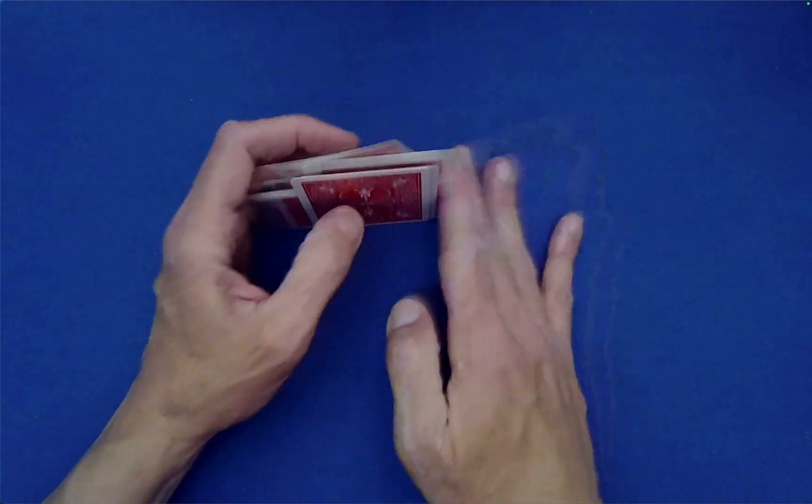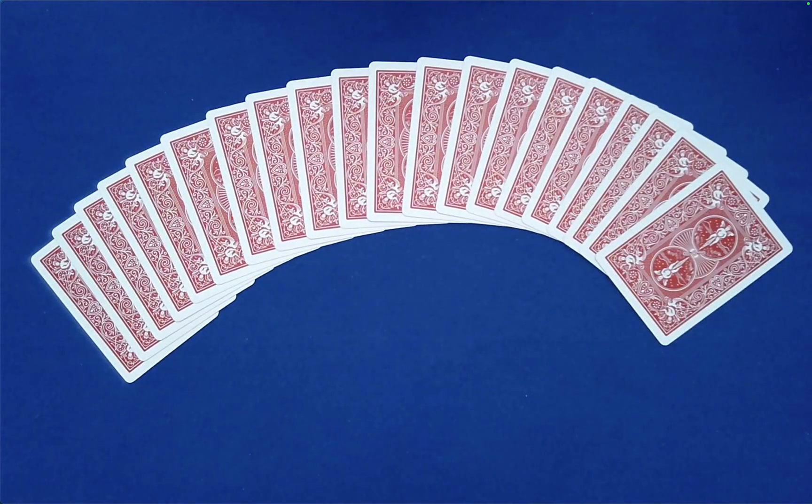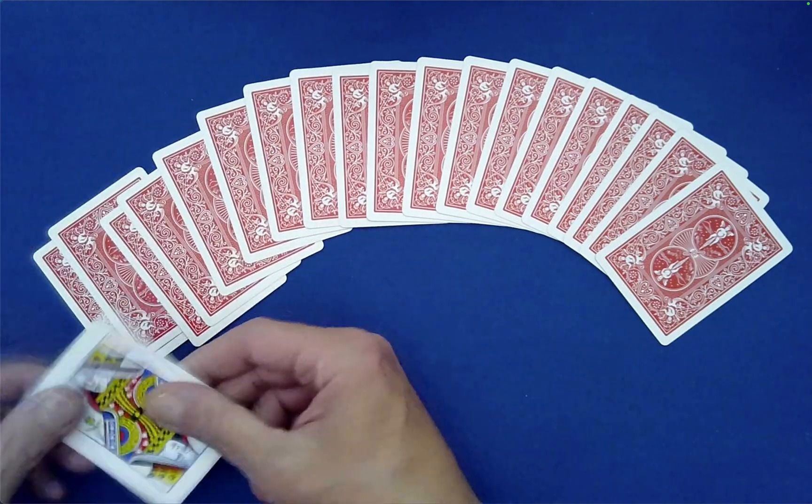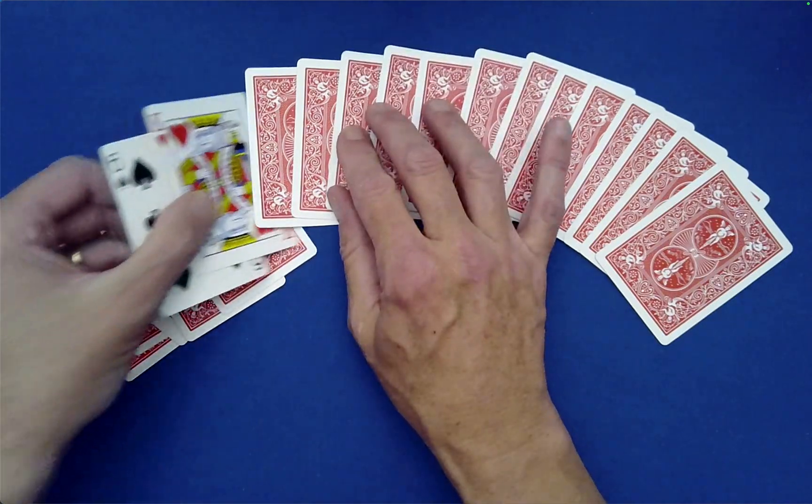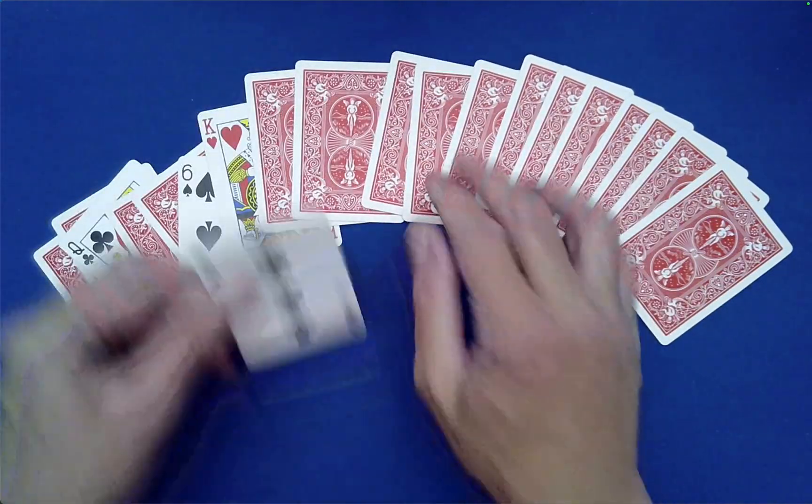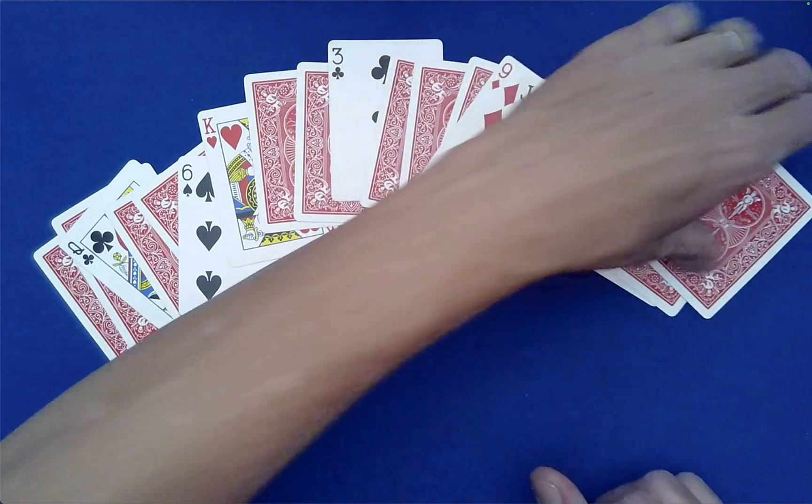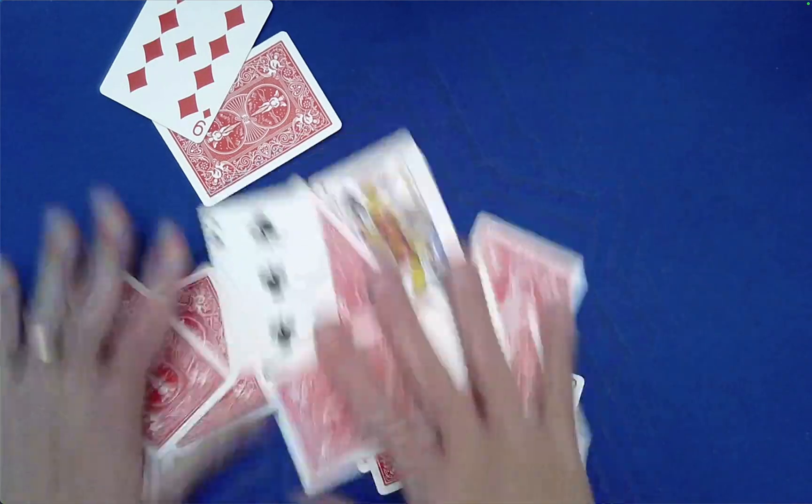And now ask the spectator to flip face up any seven of these cards, any seven whatsoever. So they may come in here and flip that one face up, maybe these two face up, and that's fine. Maybe this one right here, maybe those two, and then maybe this one right here.